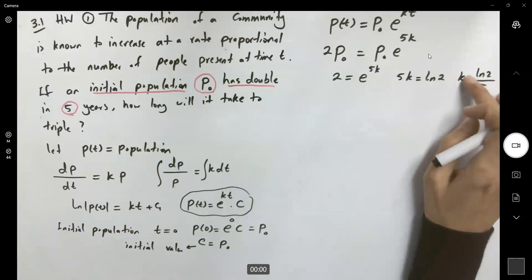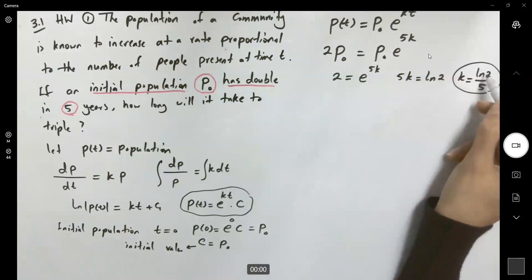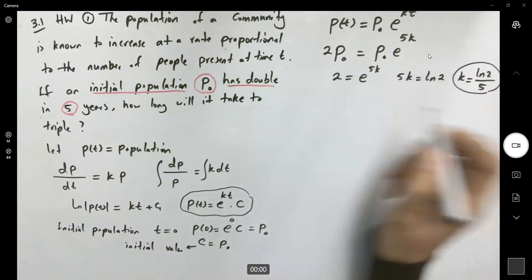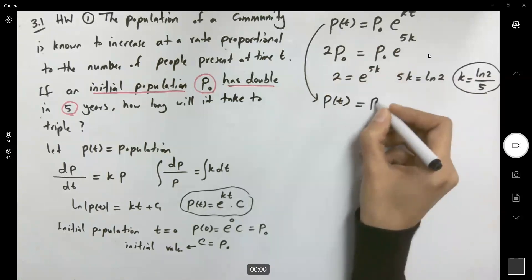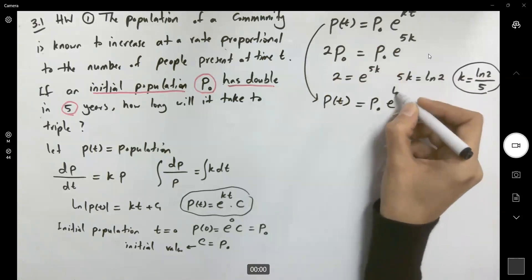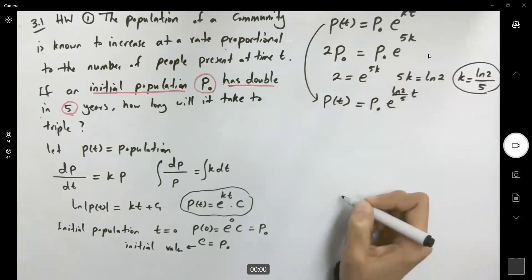The constant of proportionality is ln(2)/5, which is approximately 14%. Therefore, p(t) = p₀e^[(ln(2)/5)t].